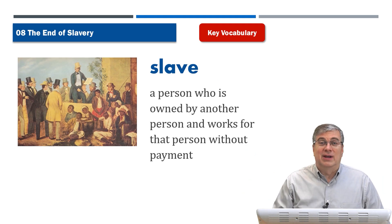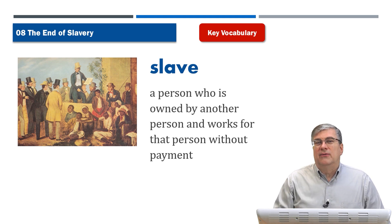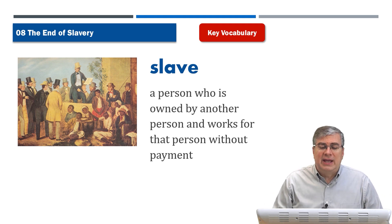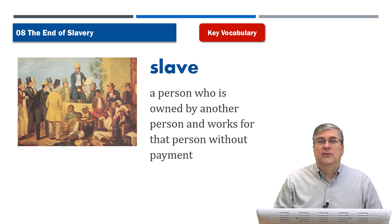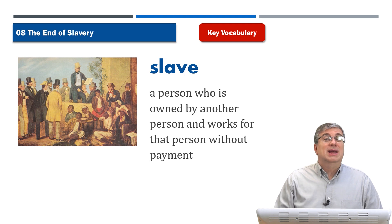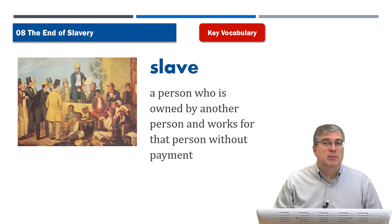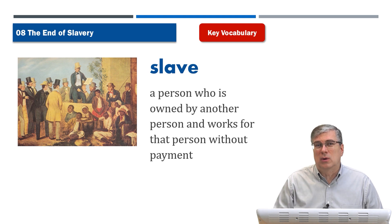Next, we have slave. We saw slavery before as the condition of being a slave. A slave is a person who is owned by another person and works for that person without payment. Unfortunately, for thousands of years, human beings have treated other human beings as slaves, and we can see this in many historical periods and in many parts of the world.